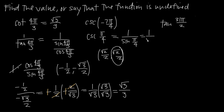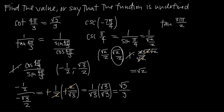So we have 1 over (√2/2). Dividing by a fraction means we multiply by the reciprocal: 1 multiplied by 2/√2. We can rewrite 2 as √2 × √2, and then cancel the √2 from numerator and denominator. The only thing that remains is √2. So cosecant of −7π/4 is equal to √2.